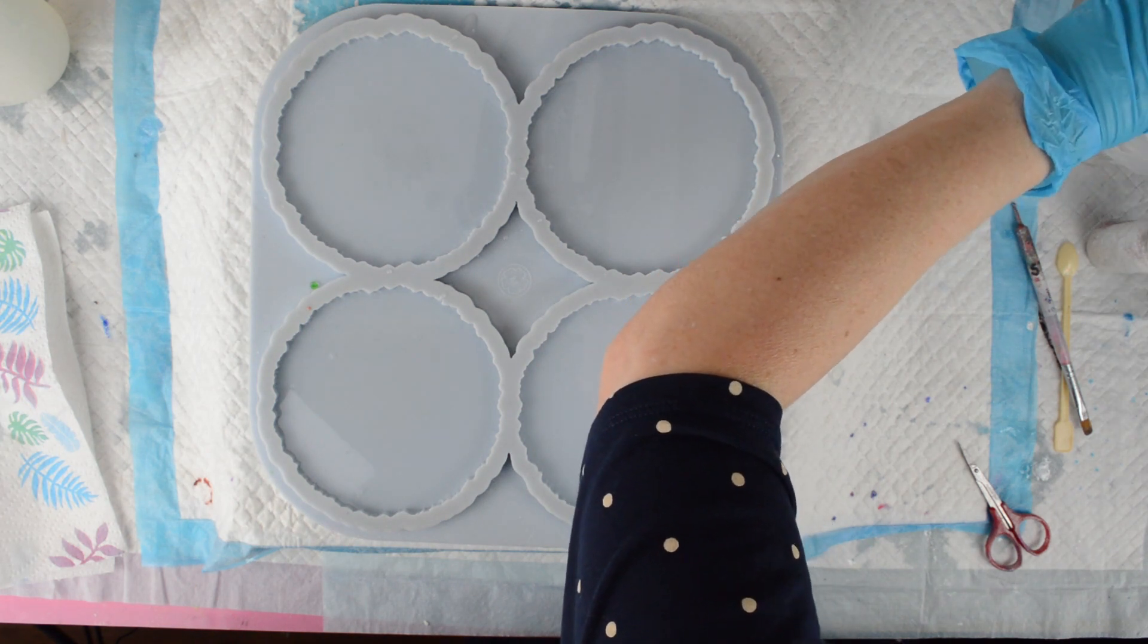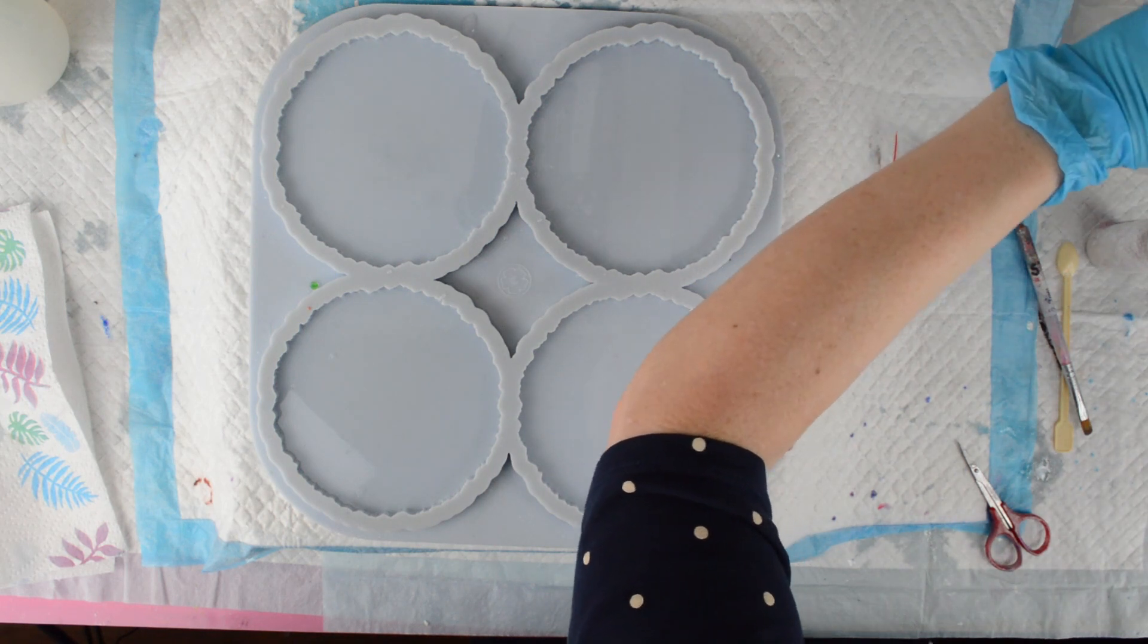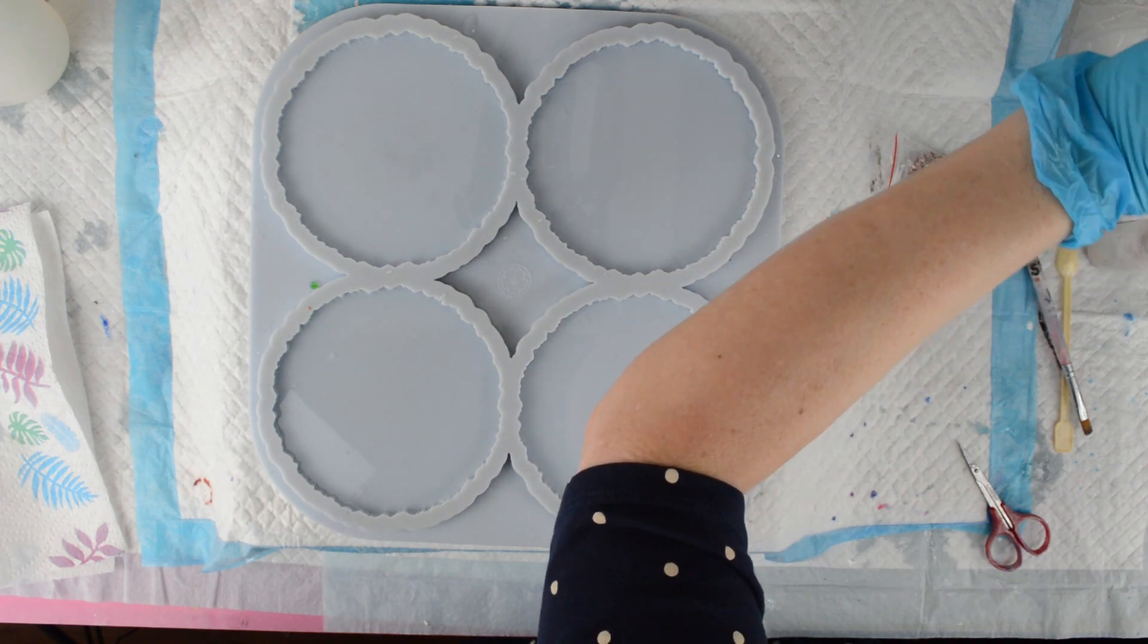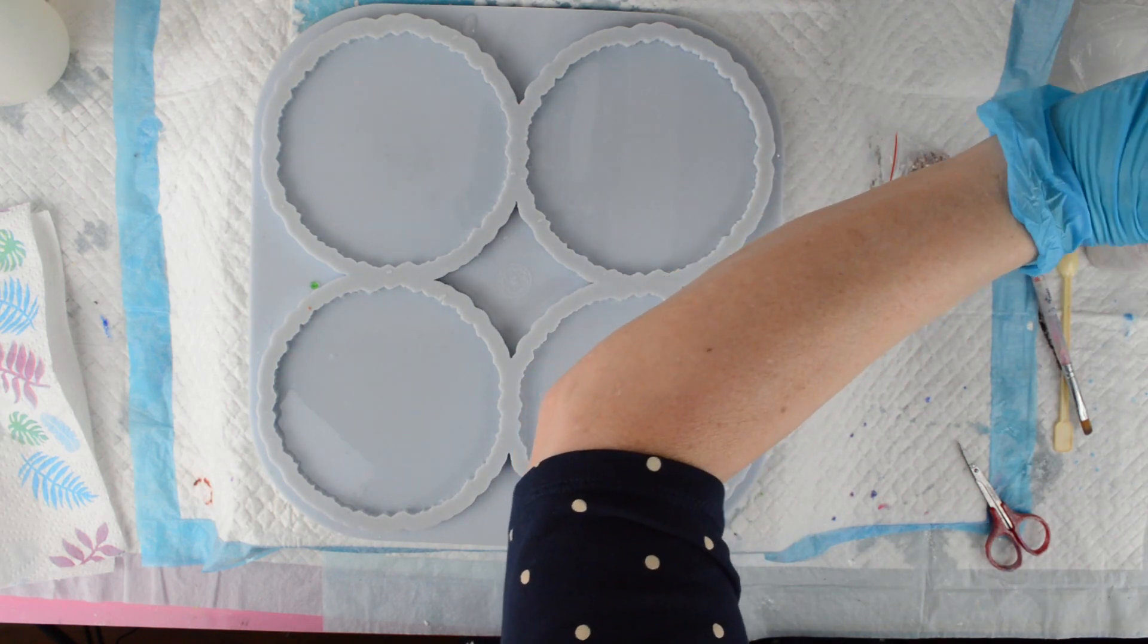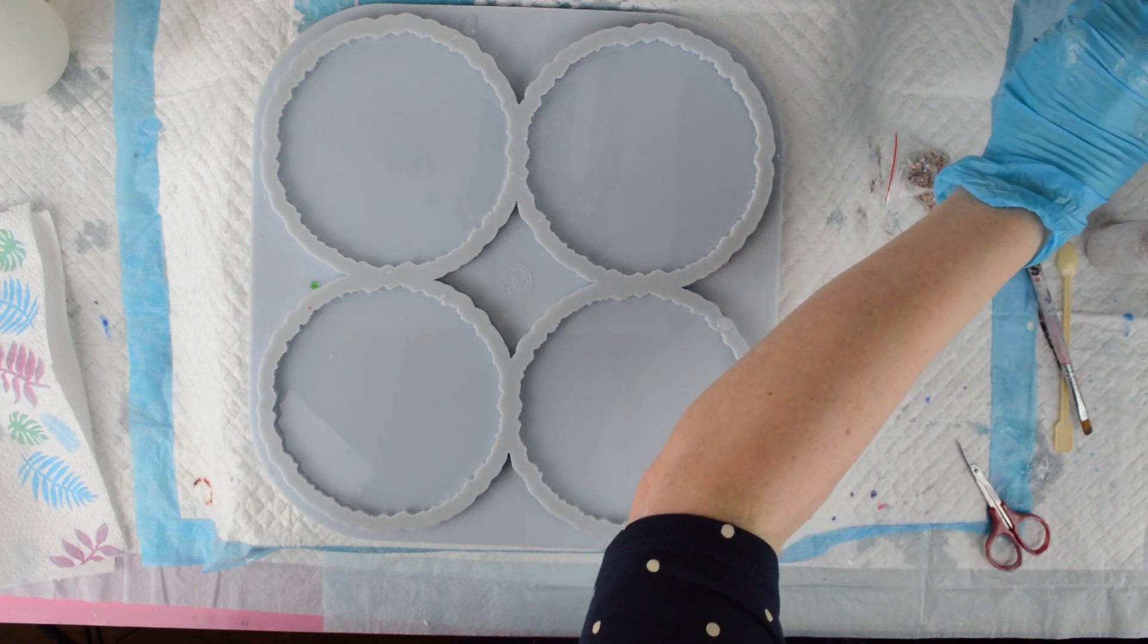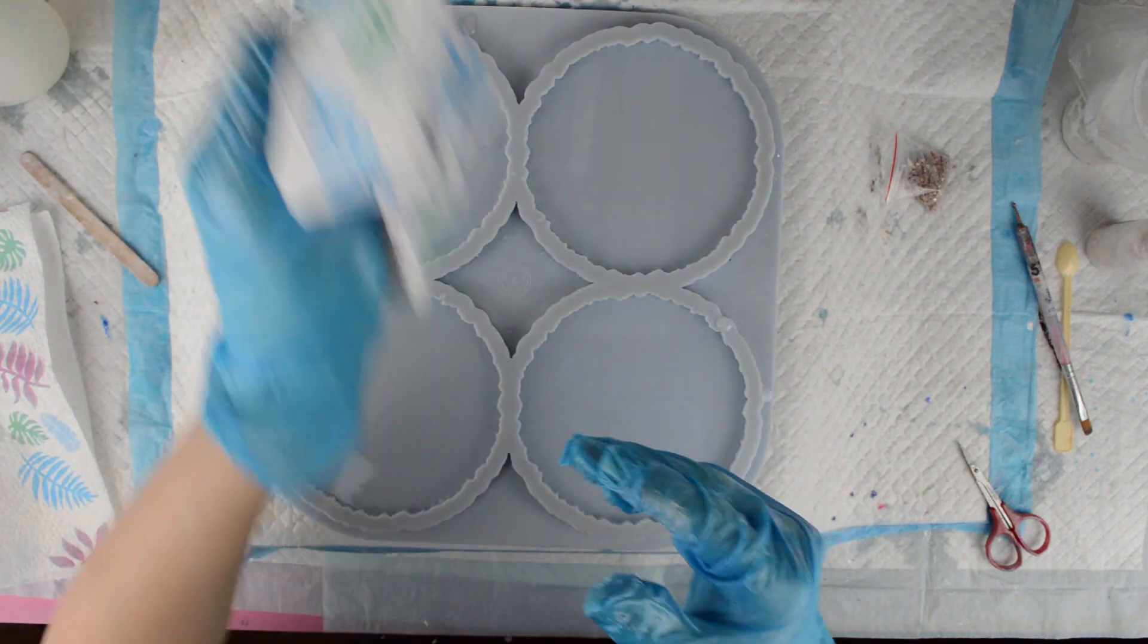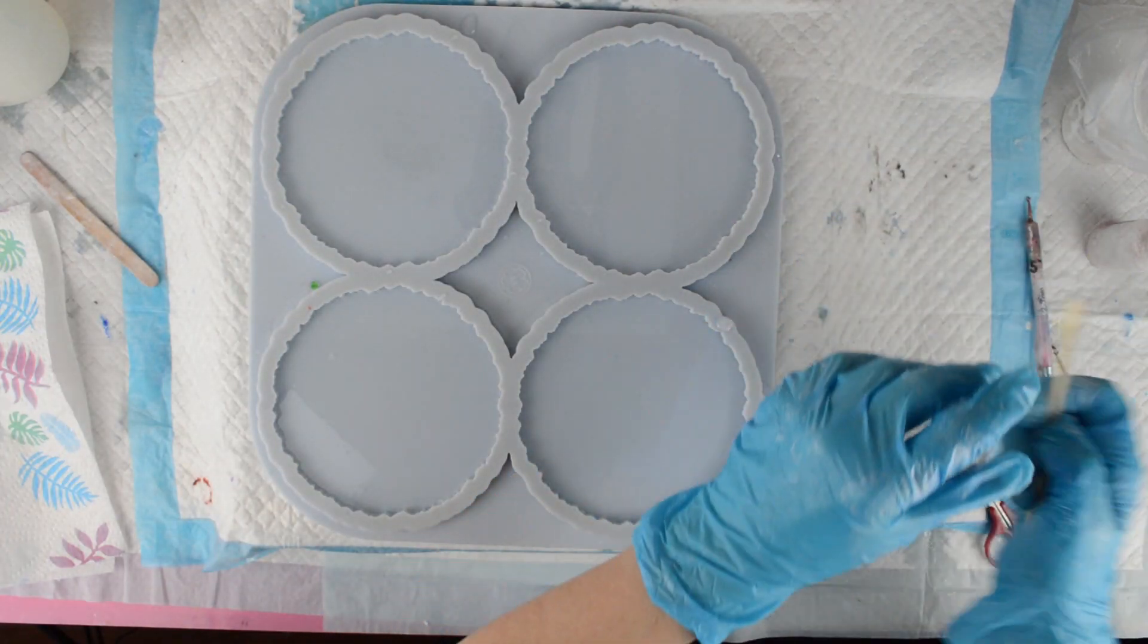Now I have got some little tiny gold, well, a kind of a bronzy, goldy, coppery color. Some little tiny glass chips that I'm going to put in the middle of the coasters. So I'm going to put those in before I do the piping. I'm just going to put them in the middle of the coasters.